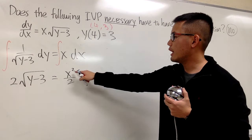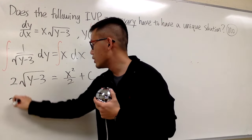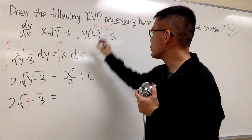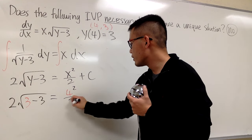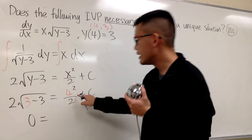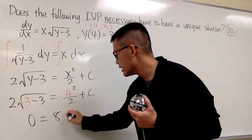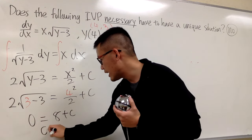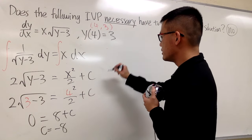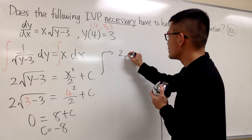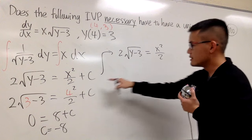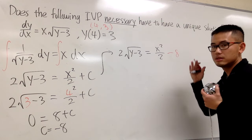Let me plug in the initial values to solve for c right away. I plug in 4 for x and 3 for y: 2 times the square root of 3 minus 3 equals 4 squared over 2 plus c. On the left-hand side we get 0, and on the right-hand side 4 squared is 16 divided by 2 is 8, plus c. So c has to be negative 8. We have the solution: 2 square root of y minus 3 equals x squared over 2 minus 8.